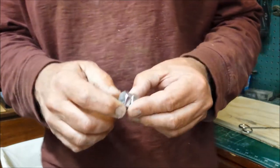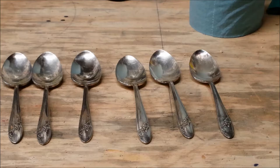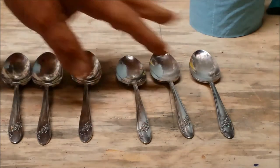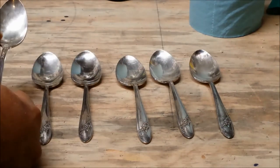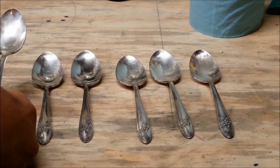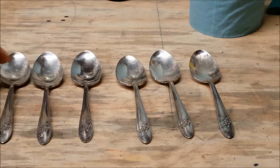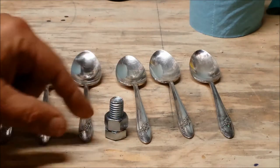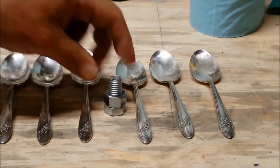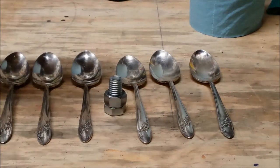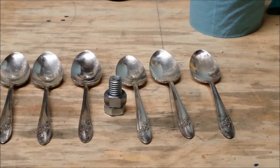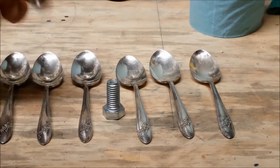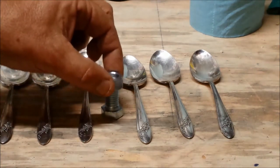You can see I have six spoons here. Try to get the spoons all the same pattern if you can because sometimes the shape will be different. These are teaspoon size, and if you're using the half inch bolt and nut, teaspoon size works nice. If you want to make something bigger with tablespoon size, then go to three quarters or something along those lines.